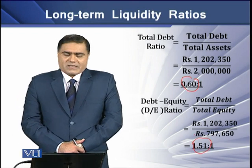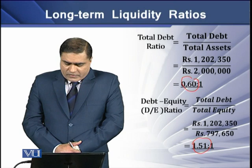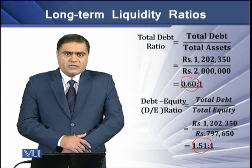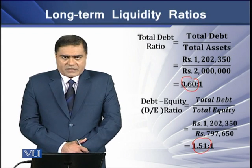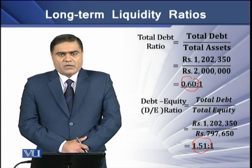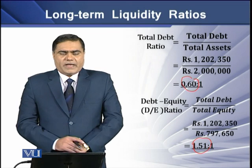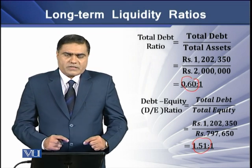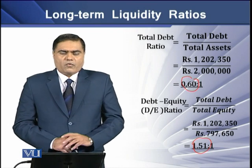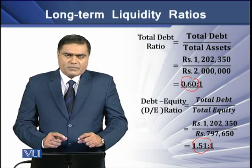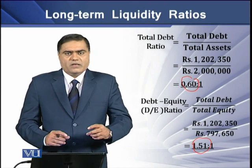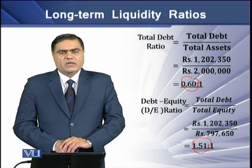This ratio tells us that the firm has 151% excess debt over its total equity. This means that for every 1 rupee invested by owners in the assets of the business, 1.51 rupees have been invested by creditors in the long-term assets of the firm.